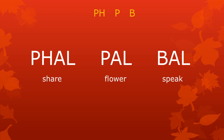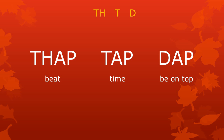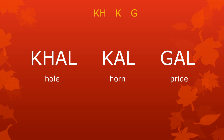For example, the difference between the sounds ph, p, and b is important to make the difference between the words phal, pal, and bal, which all have different meanings. The difference between th, t, and d is important for tap, tap, and dap. The difference between kh, k, and g is important for khal, kal, and gal.